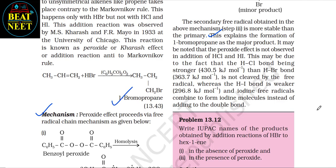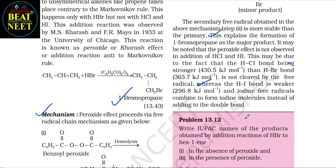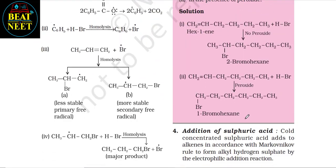It may be noted that the peroxide effect is not observed in the addition of HCl and HI. This may be due to the fact that the H–Cl bond is stronger (430.5 kJ/mol) than the H–Br bond (363.7 kJ/mol) and is not cleaved by the free radical, whereas the H–I bond is weaker (296.8 kJ/mol) and iodine free radicals combine to form iodine molecules instead of adding to the double bond.